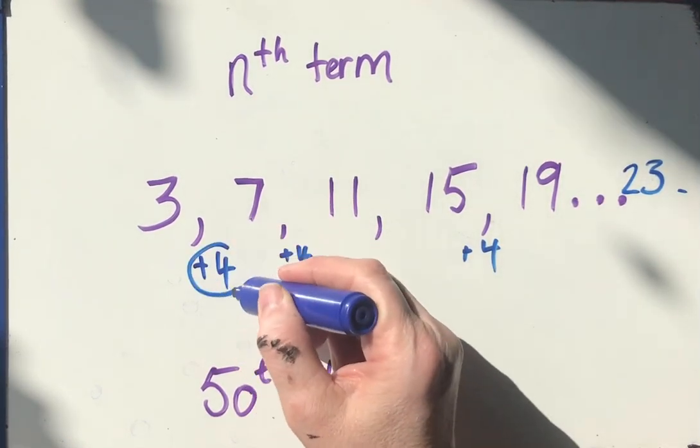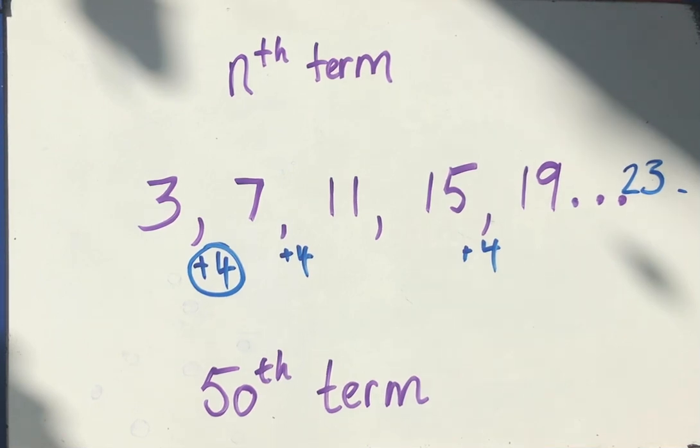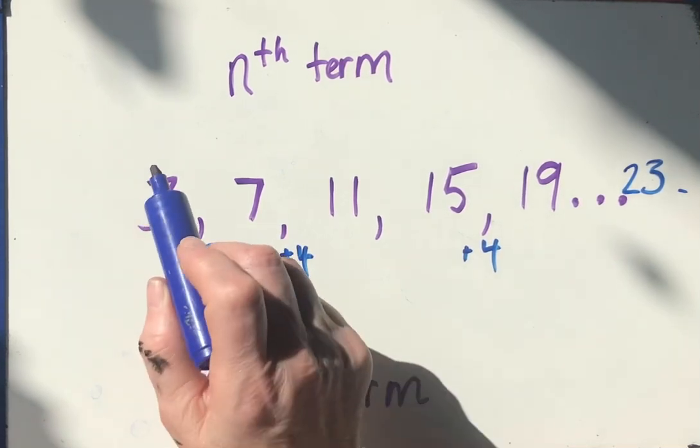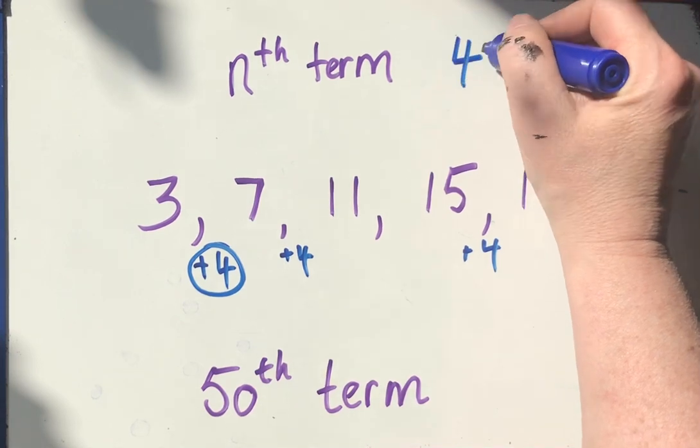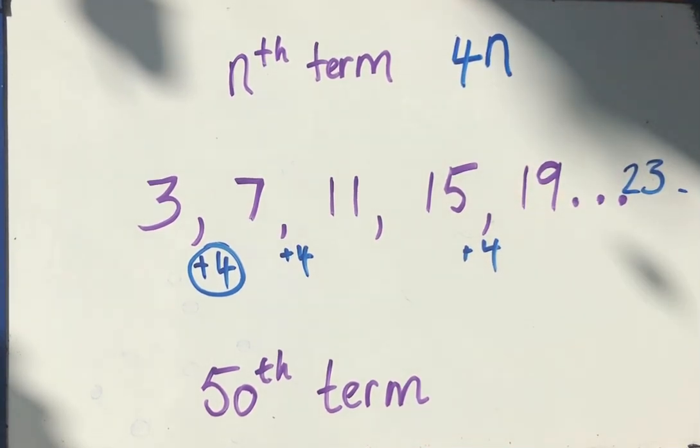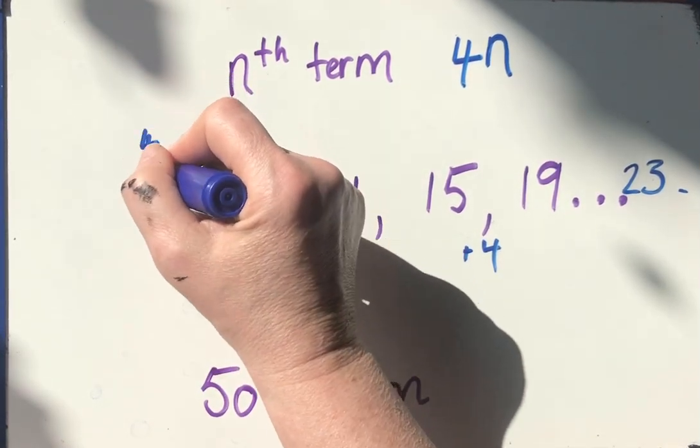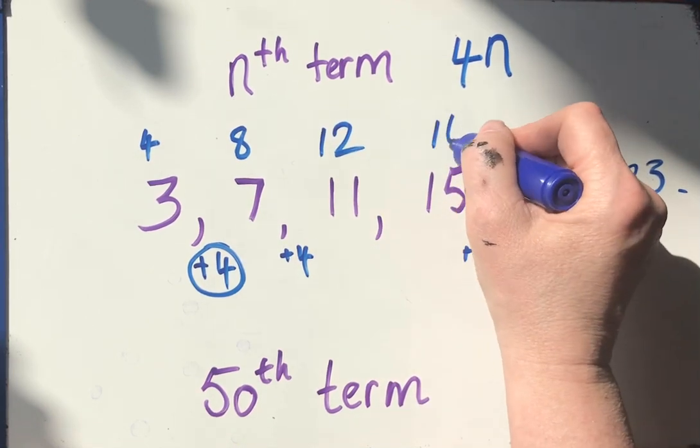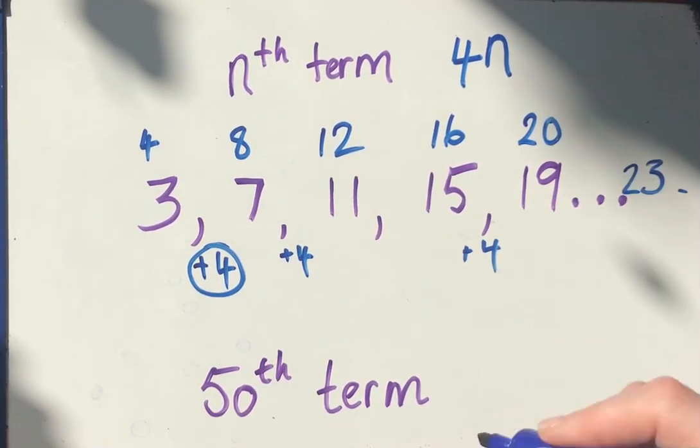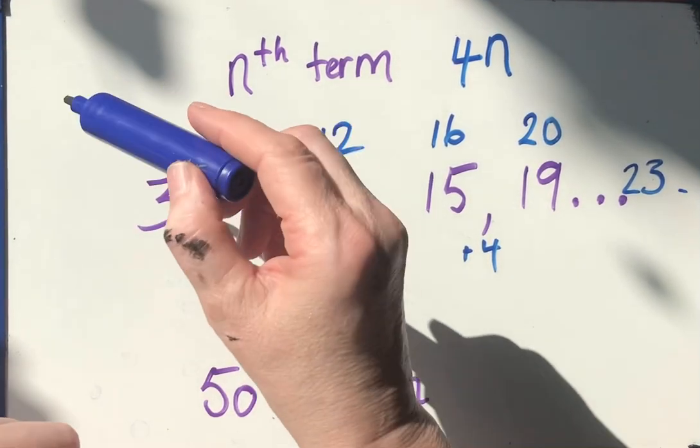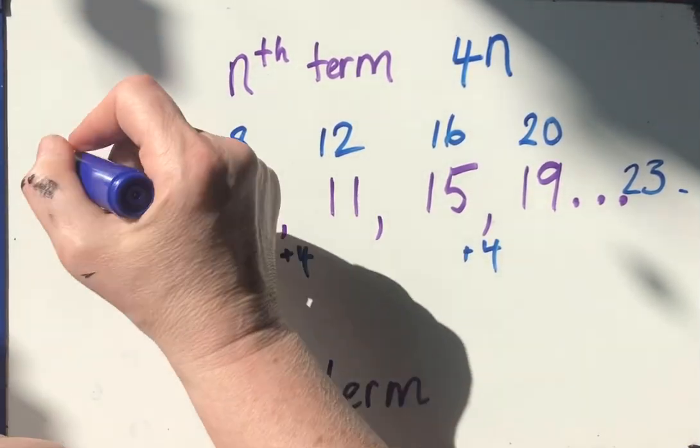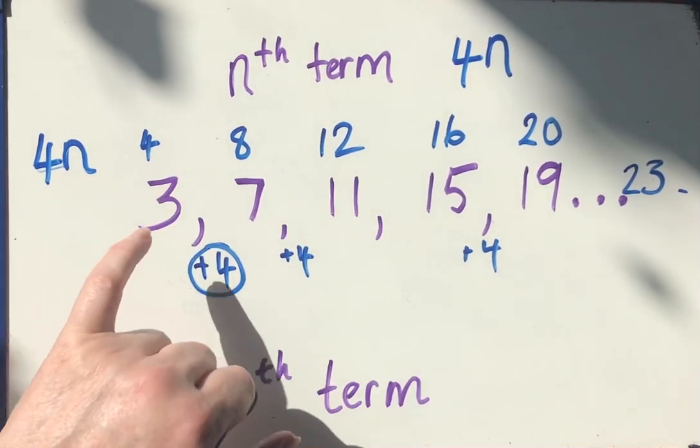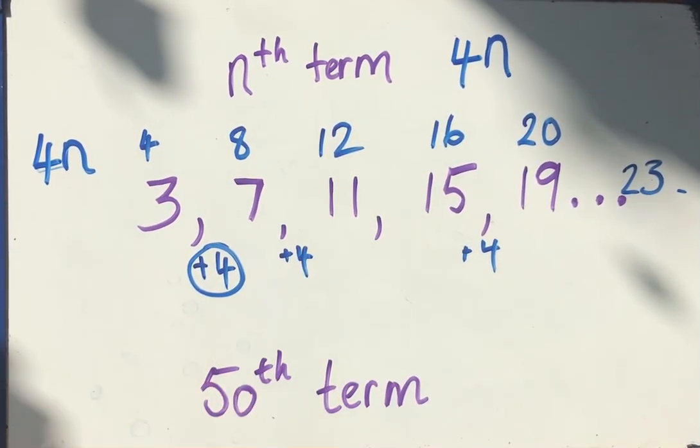So this is related to the four times table. The four times table is four times one is four, four times two is eight, etc. So any number in the four times table is written as 4n. But the four times table goes 4, 8, 12, 16, 20. Can you see a relationship between the 4 times table, the 4n here, and the number I've got?